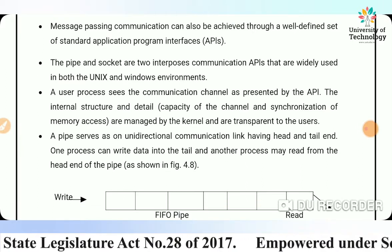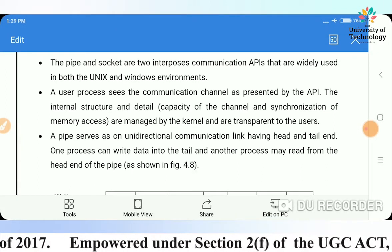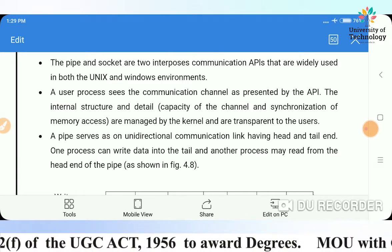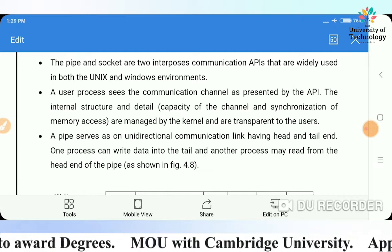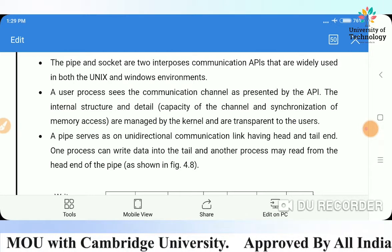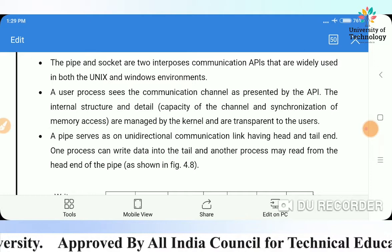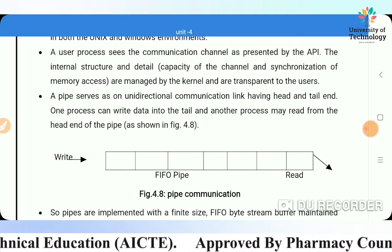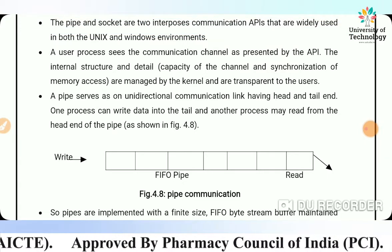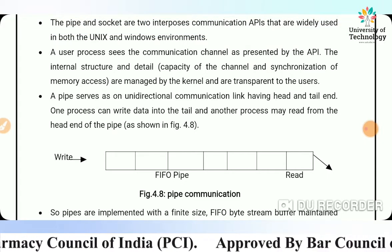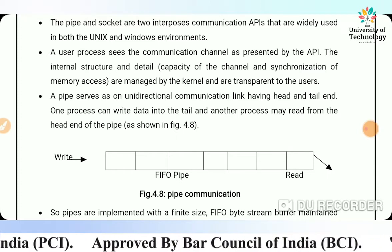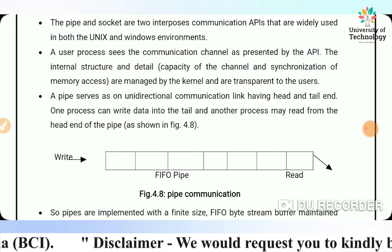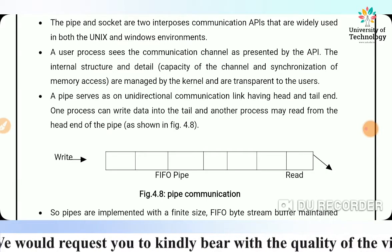A user process sees the communication channel as presented by the API. The internal structure, detail capacity of the channel, and synchronization of memory access are managed by the kernel and are transparent to the users. A pipe serves as a unidirectional communication link — one process can write data into the tail and another process may read from the head.